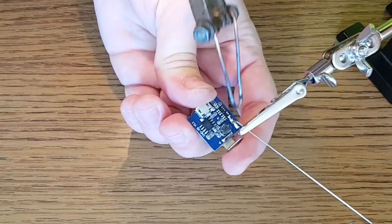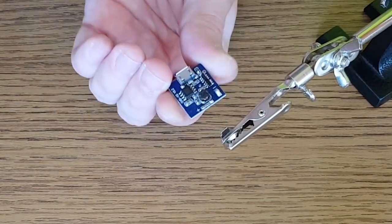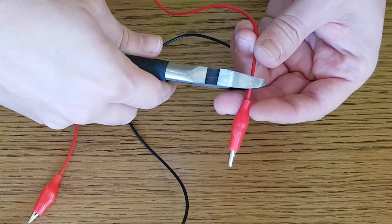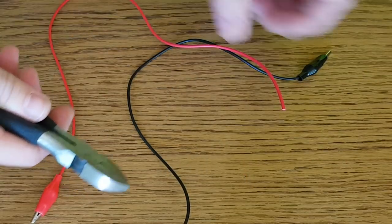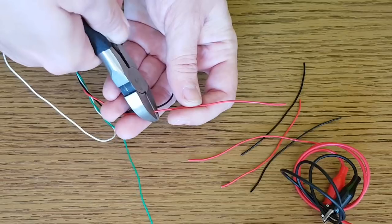We start by unsoldering the battery pins. Cut the pliers from one end of the cables and prepare some wires for the internal connections.